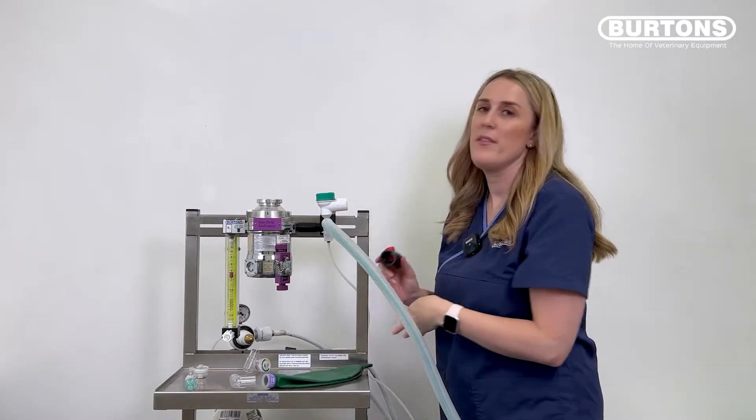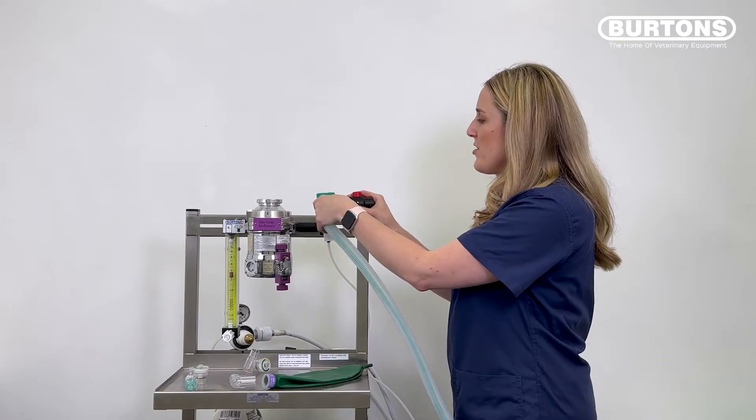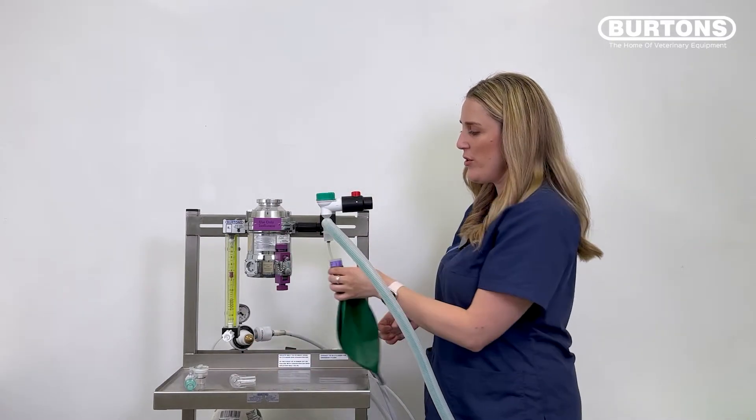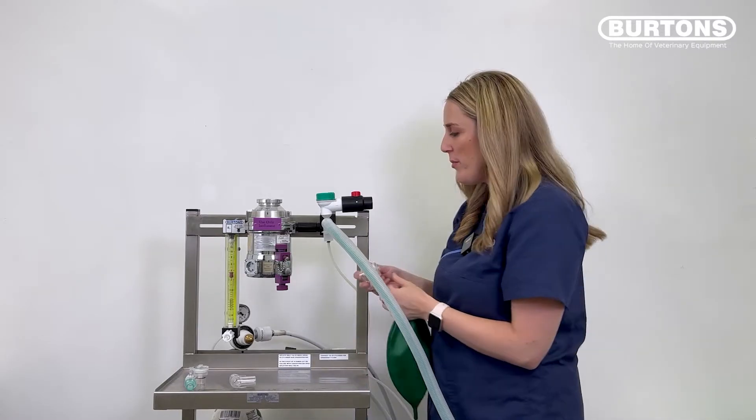Attach that to the common gas outlet. You can put our IPPV button valve just onto the scavenging system here. And where our reservoir bag would go is just here. So that's actually where I'm going to go and put in our manometer.